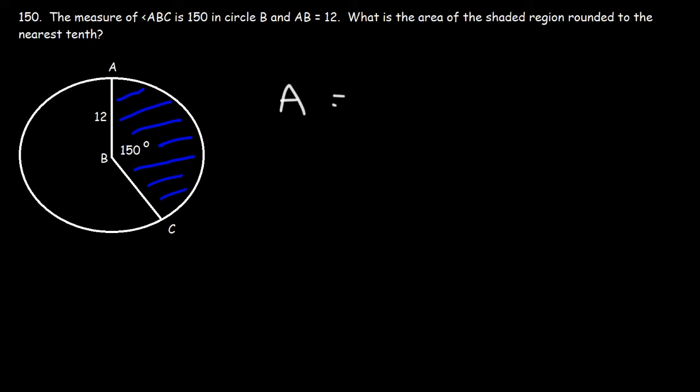Now, we know that the area of a circle is pi r squared. To find the area of a fractional portion of the circle, it's going to be pi r squared times the angle that is associated with the shaded region divided by the angle for the entire circle, which is 360.